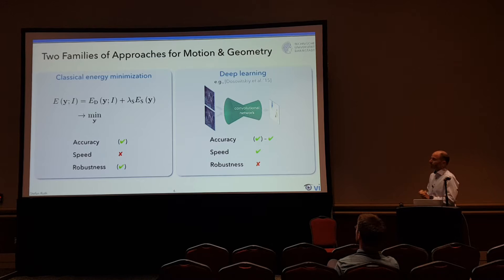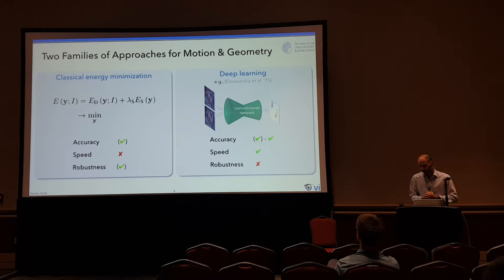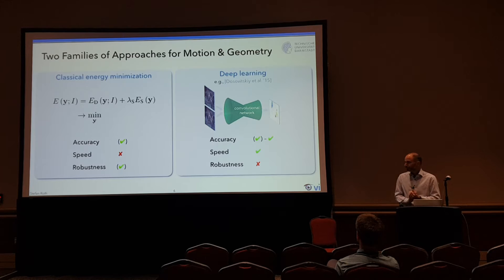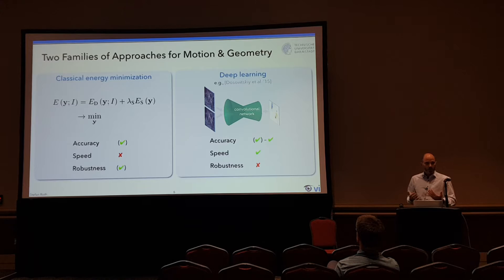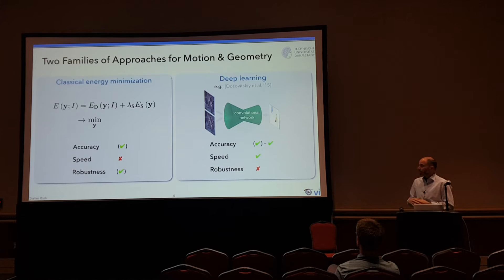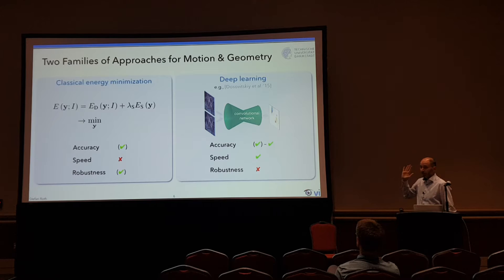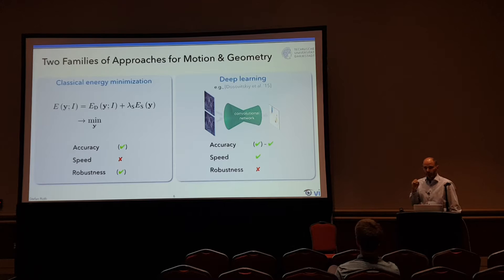There's classical energy minimization, which has dominated computer vision research for easily two decades. Some of the benefits are that it's fairly accurate — model-based approaches aren't so far behind deep learning. They tend to be pretty slow, but have a big advantage in terms of robustness: if you throw them at a new scenario, they tend to work okay because they have only a few parameters, making them hard to overfit. Contrasting with deep learning: the accuracy is very high especially with lots of in-domain training data, and we get it really fast. On the other hand, robustness is lacking to some extent.